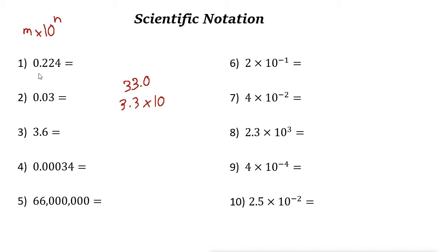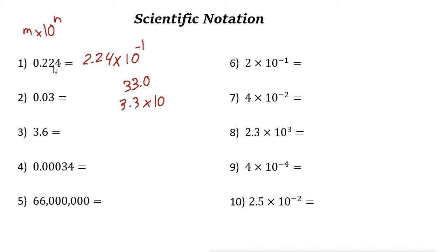If you have a decimal number, you need to move the decimal point to the right. For 0.224, moving it 1 place to the right gives 2.24, multiplied by 10 to the power of negative 1. So 2.24 times 10 to the power of negative 1 equals 0.224.